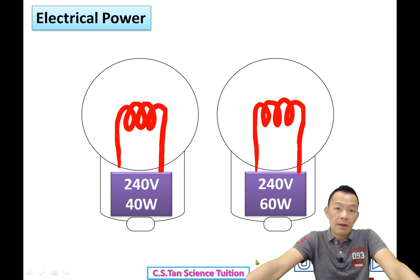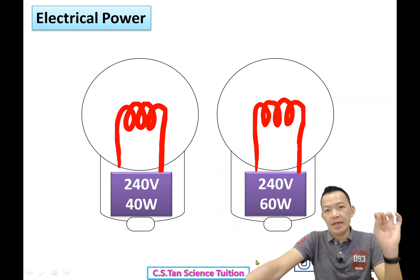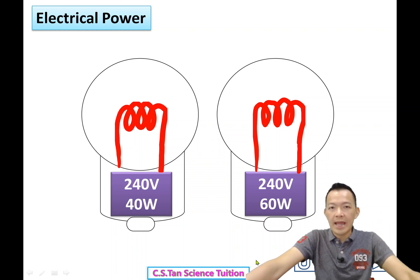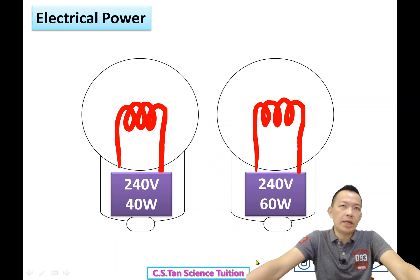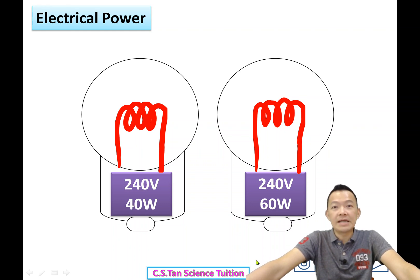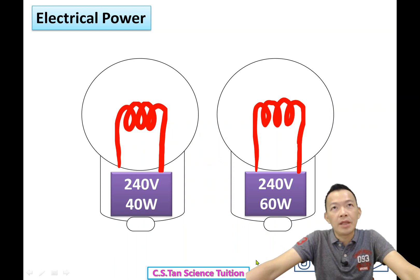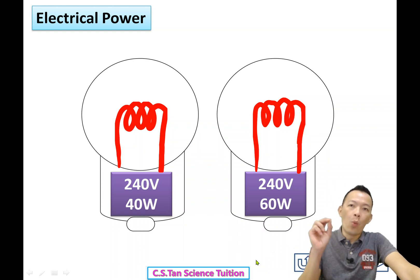At the shop, you tell the shopkeeper you want to buy a light bulb — 240 volts, for Malaysia. The shopkeeper asks, 'How many watts?' You say '240 lah', and the shopkeeper replies 'Watt lah!' — meaning the wattage, not voltage.